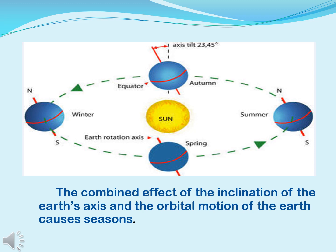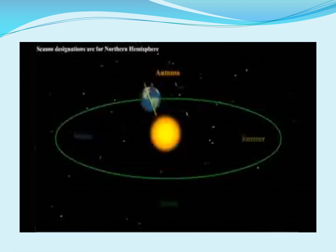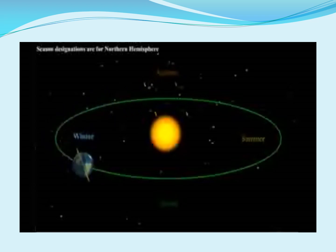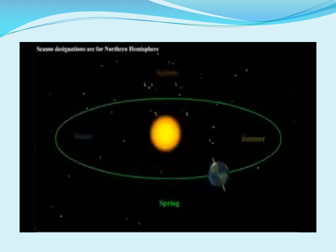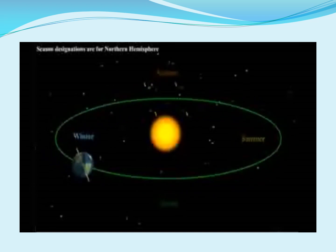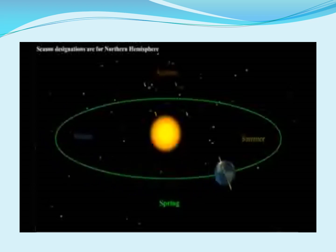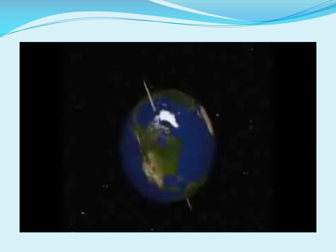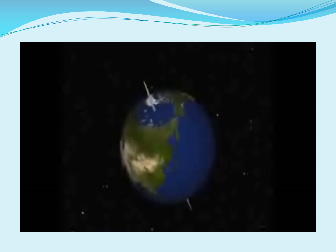The combined effect of the inclination of the Earth's axis and the orbital motion of the Earth causes seasons. From these activities we learn that seasons change throughout the year because of the way the Earth moves. The Earth revolves around the sun and as it revolves it spins on its own axis too. The Earth's axis tilts to the side, making an angle of 23.5 degrees. So as it rotates around the sun, half of the Earth is leaning towards the sun and half is leaning away. Earth's orbit, its rotation on its axis, and its tilt are all the reasons for the formation of seasons.